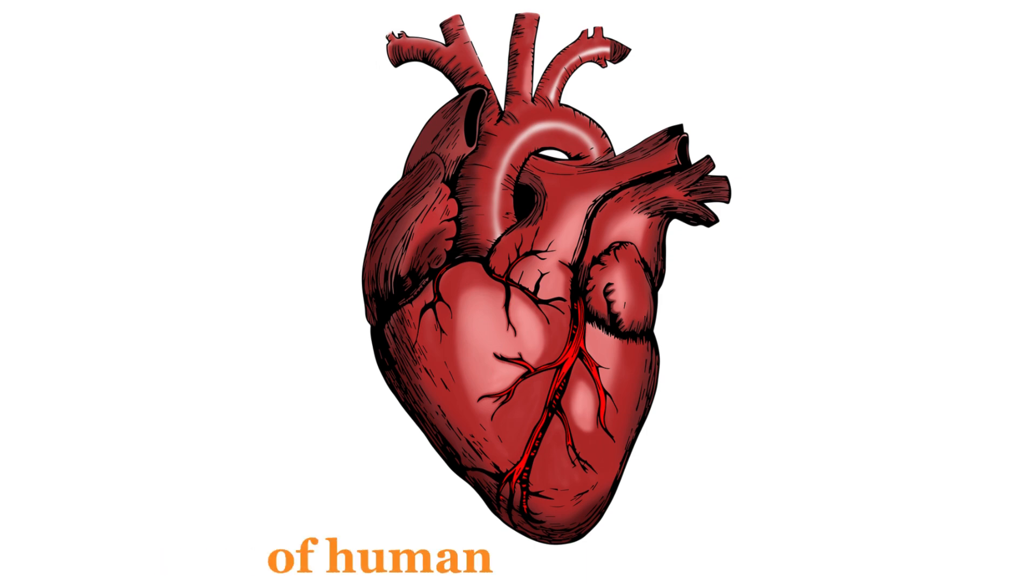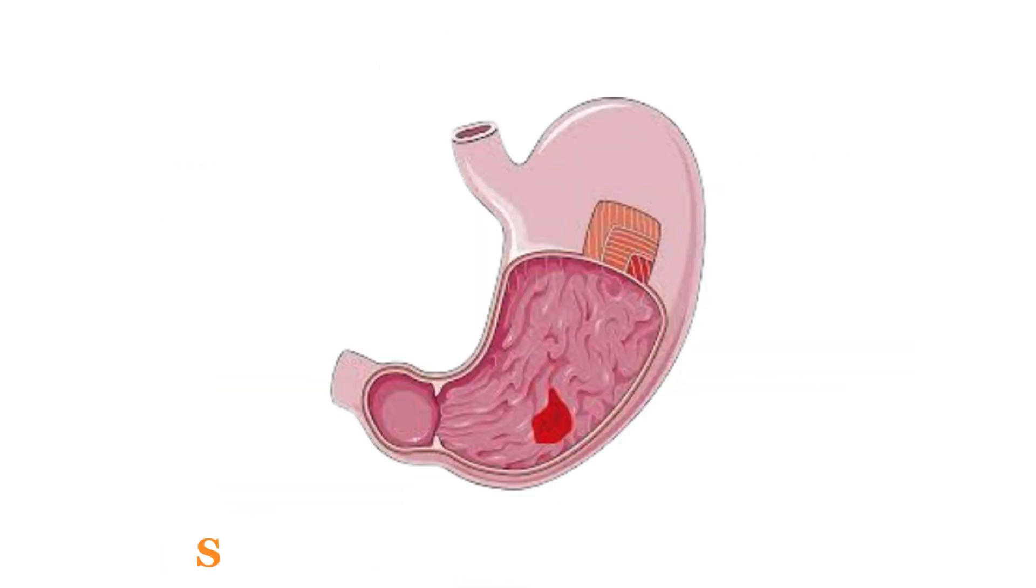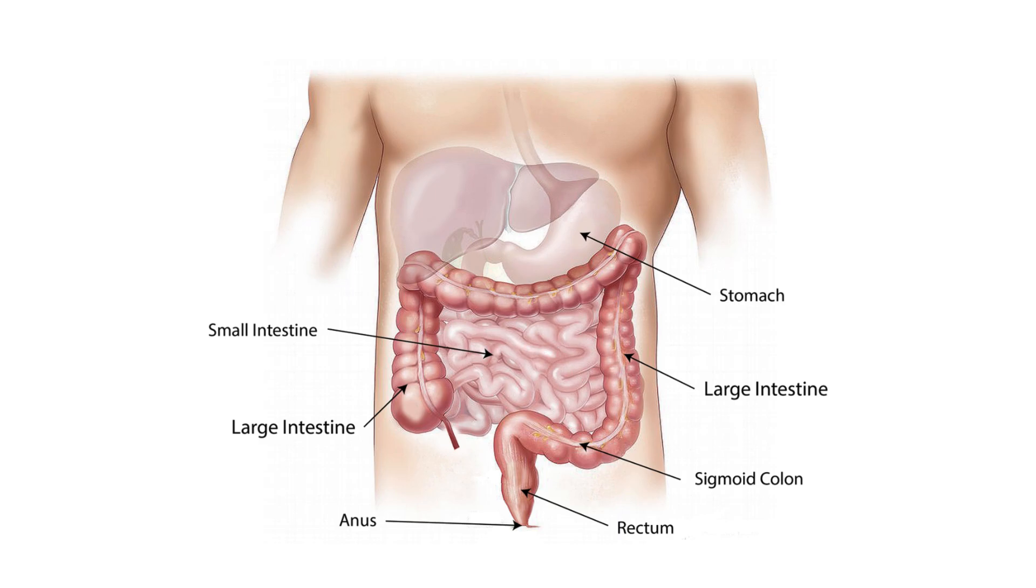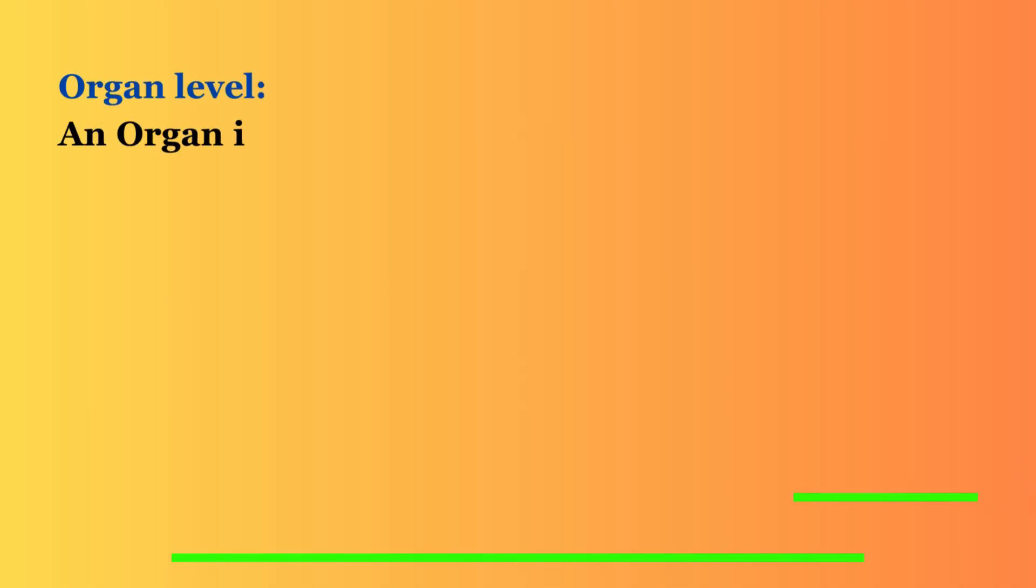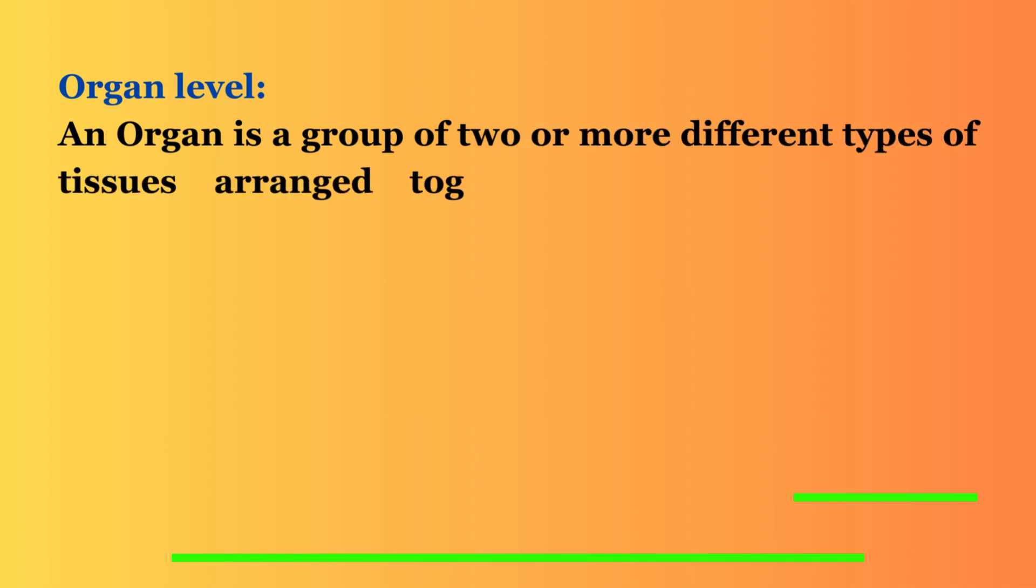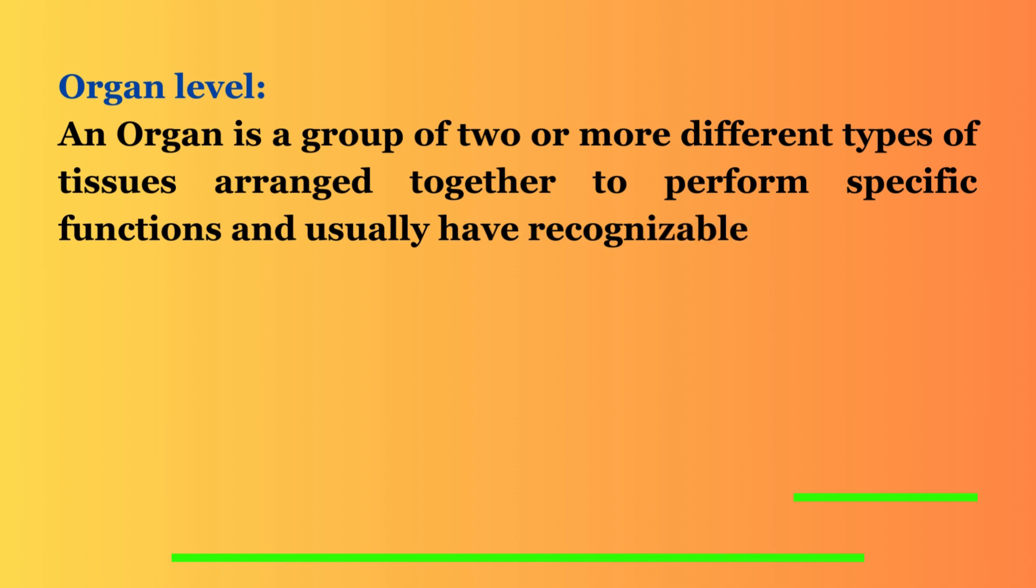Dear viewers, now our topic is about the organ level of the human body. Organ level. An organ is a group of two or more different types of tissues arranged together to perform specific functions and usually have a recognizable shape.